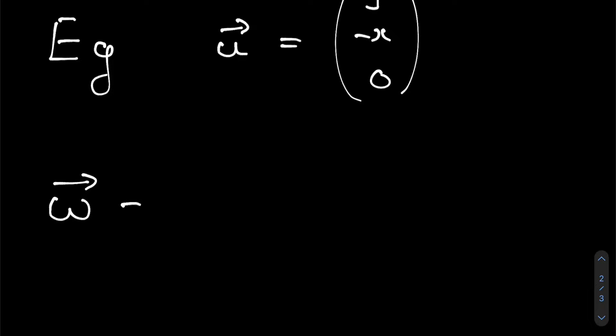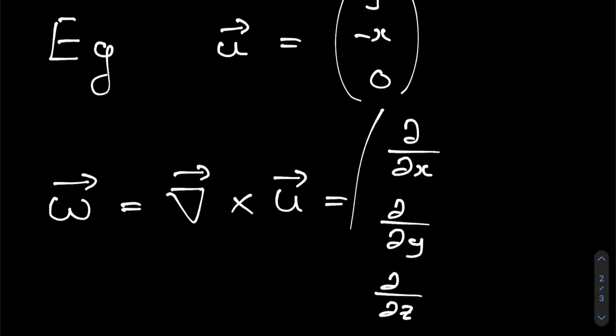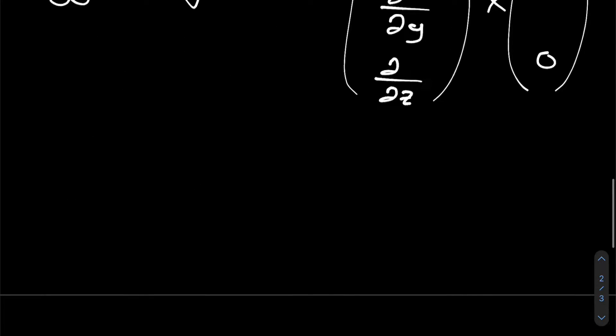And it has a natural intrinsic spin to it that we'd love to analyze with vorticity. So our vorticity would just be the curl of this velocity, which is d dx, d dy, dz, cross product with y, minus x, and zero.